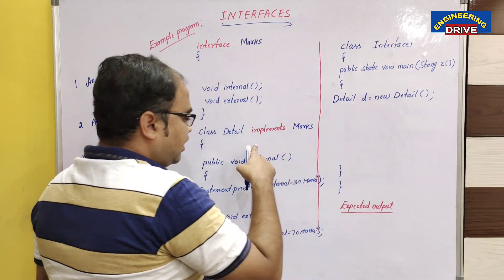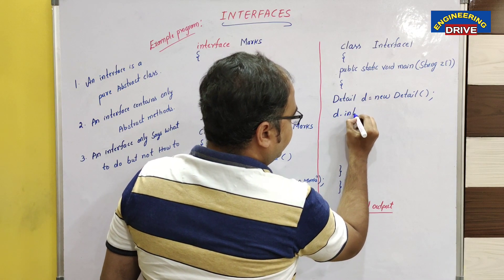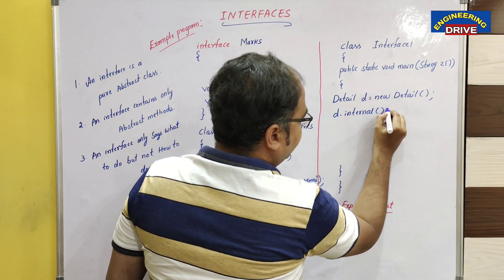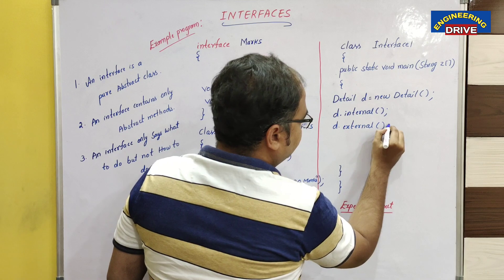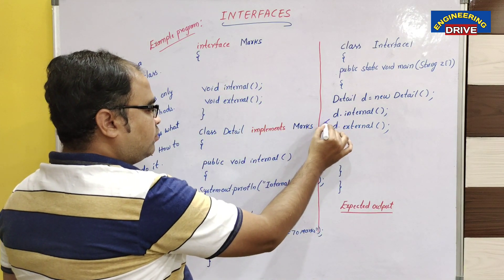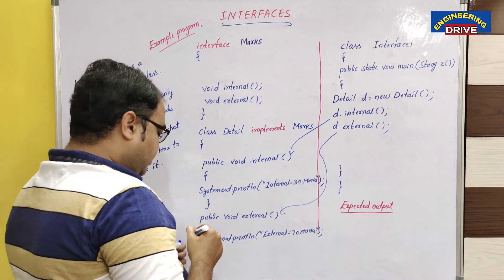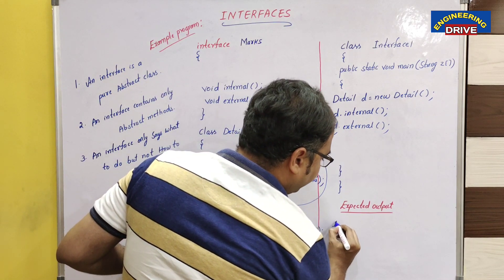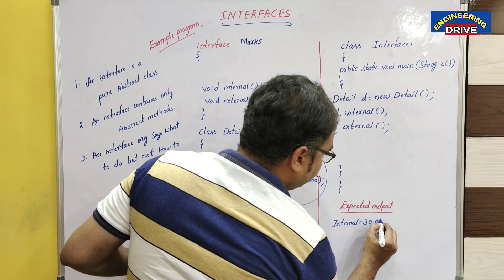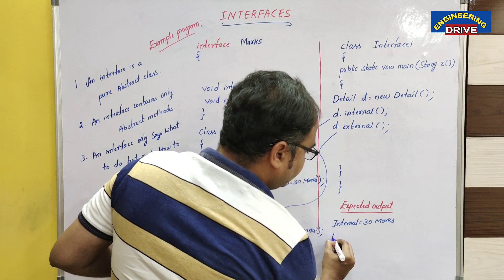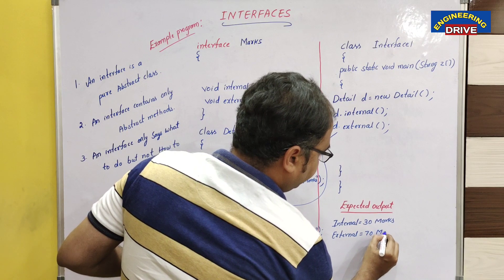I have created an object of class 'detail' named 'd'. By using this object, I can invoke the methods: d.internal() and d.external(). When d.internal() is called, control goes directly to that method; d.external() goes to the external method. The expected output of this program will be: internal = 30 marks and external = 70 marks.